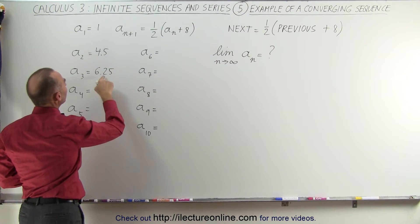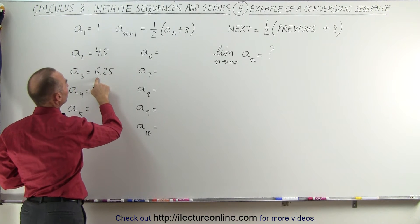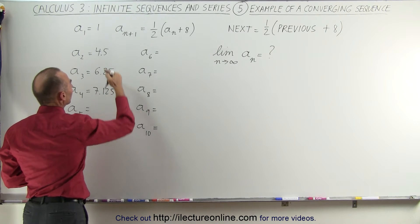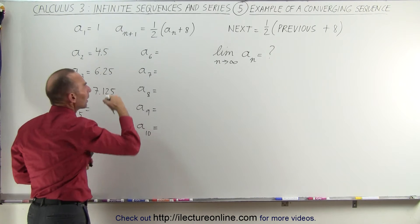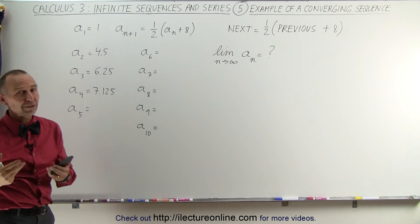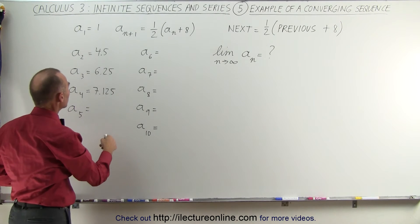The next one would be this plus eight divided by two, that would be fourteen point two five divided by two which is 7.125. You can see that the increases are becoming smaller which would be indicative of something converging, but it may not be apparent yet what the value will be that it converges to. So let's continue.